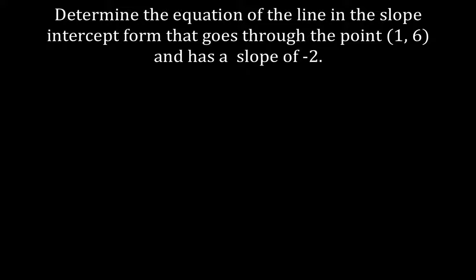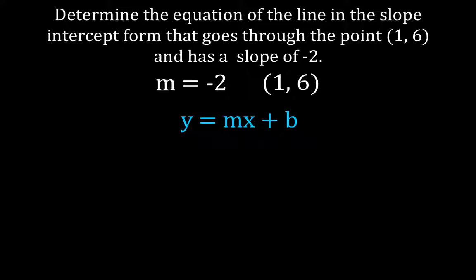We're going to determine the equation of a line in slope-intercept form that goes through the point (1, 6) and has a slope of minus 2. Let me write down the two things I've been given: the slope m equals minus 2, and the point is (1, 6). The equation y equals mx plus b has four things in it. We know three — m, x, and y — so we can plug the values in and solve for b.